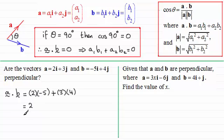OK so minus 10 plus 12 here is going to give us 2. And clearly that doesn't equal 0. If it equaled 0 we know that they would be perpendicular. So the answer is therefore a and b are not perpendicular.